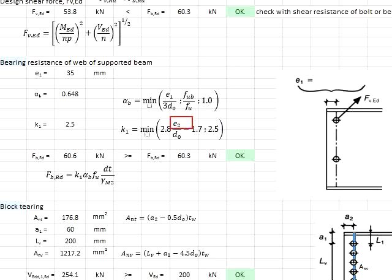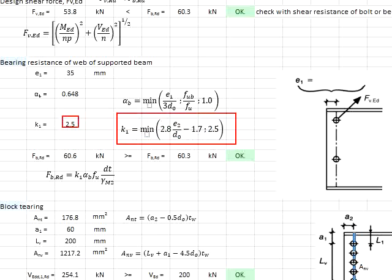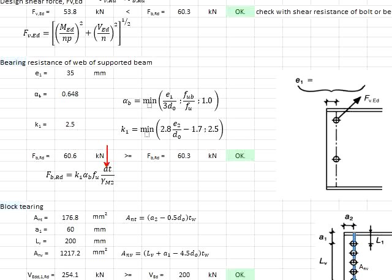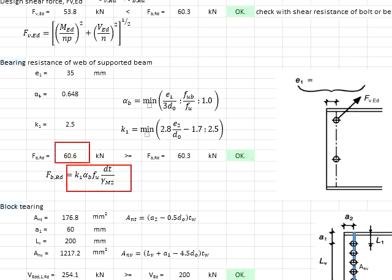Assuming e2 is also equal to 35 mm, and the diameter of the bolt hole is equal to 18 mm, substituting the relevant values gives k1 equal to 2.5. The bolt diameter d is 16 mm, the factor of safety is 1.25, and the thickness of the web is 6.8 mm. Substituting the relevant values, the bearing resistance of the web equals 60.6 kN.